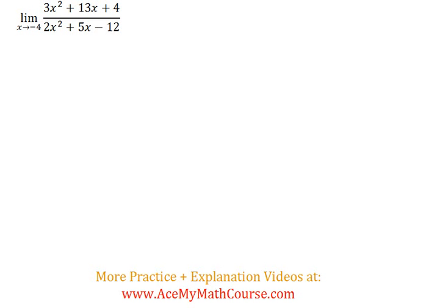Evaluate the limit as x approaches negative 4 of this fraction. Could I plug in the negative 4 for x right away? No. And why is that? Because if we were to do that we would actually get zero in the denominator and we can't have that.